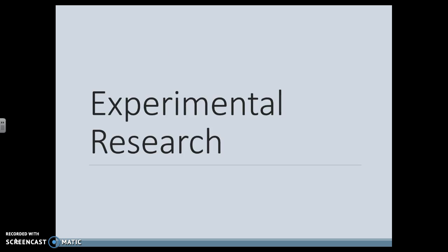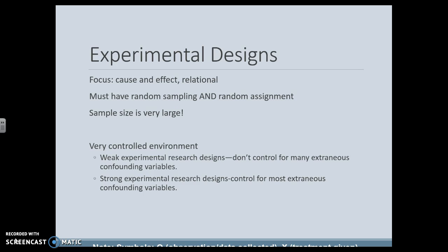Experimental research is focused on cause and effect — A affects B. You must have random sampling and random assignment, and the sample size is quite large. You have to do a power analysis to understand how big a sample you need, but it's fair to say a hundred is probably too small, and a thousand might also be too small depending on what you're looking at. These designs are all based on how controlled your environment is. We are trying to control as many things as possible, focusing only on variable A and variable B, and ruling out everything else.